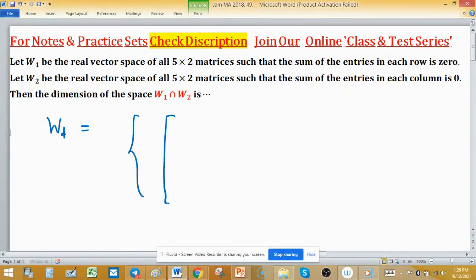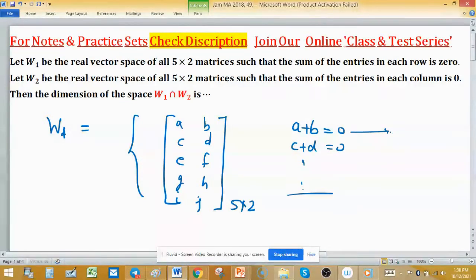In W1, elements are like this: suppose it is A, B, C, D, E, F, G, H, I, J. This is 5×2 matrices and the property on the elements is that sum of each row is 0, then C plus D equals 0 and same for other rows. From the first equation you can write A equals minus B or B equals minus A.